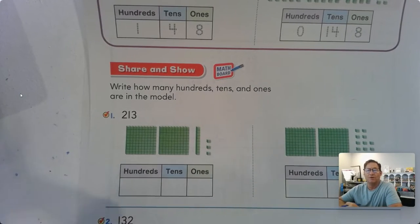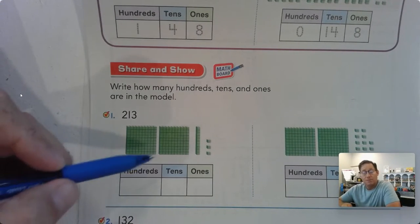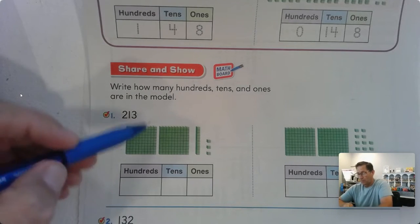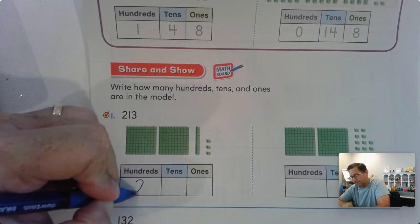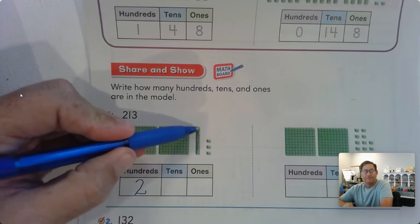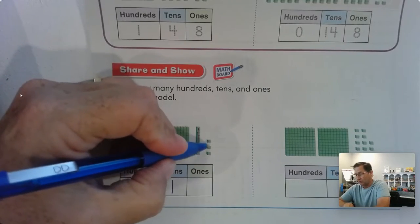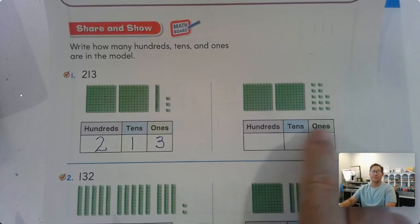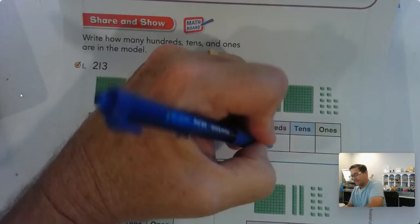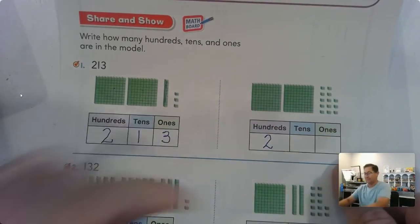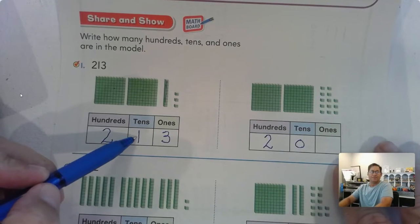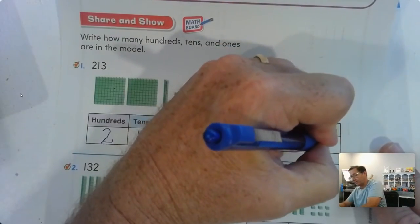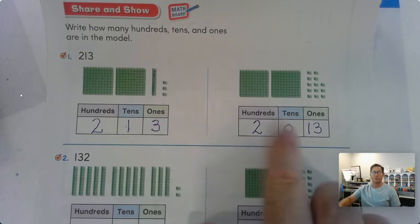Write how many 100s, 10s and ones are in the model. We don't have to come up with a different way. All we have to do is what is the model showing us? How many 100s are in the model? One, two. How many tens? One. How many singles or ones? Three. How many 100s, 10s and ones in this one? I see two 100s. This time I don't see any tens. So what did they do with the tens? The one ten? They traded it for ten ones. So ten ones plus three ones is 13 ones. But they're still both equal to 213.